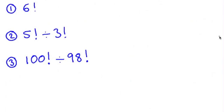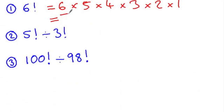Let's look at some factorial calculations that you should be able to do without a calculator. So we'll start with six factorial. As you know, it's six times five times four times three times two times one. Six times five is 30 times four is 120 times three is 360 times two is 720 times one is still 720.